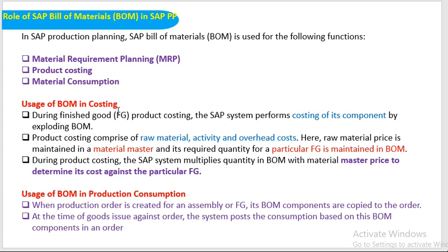During finished goods product costing, the SAP system performs costing of its components by exploding the BOM. In order to make a finished product, we need components and assemblies — without this we cannot directly call it a final product or FG. The BOM helps in exploding the cost of each component — raw material cost, labor cost, activity cost, and overhead cost. During product costing, the SAP system multiplies the quantity in the BOM with the material master price.